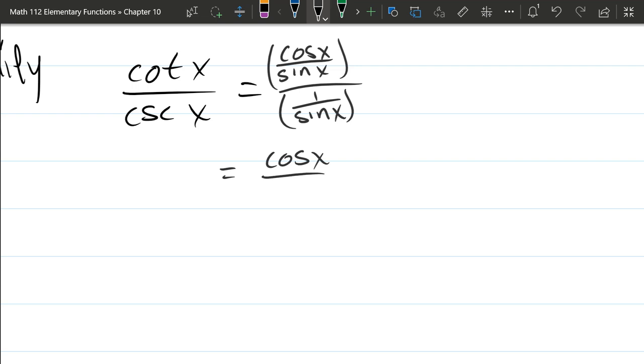So we got cosx over sine x times the reciprocal of one over sine, which is sine x over one. And right here, oh, look at that.